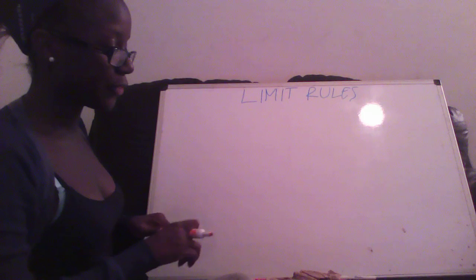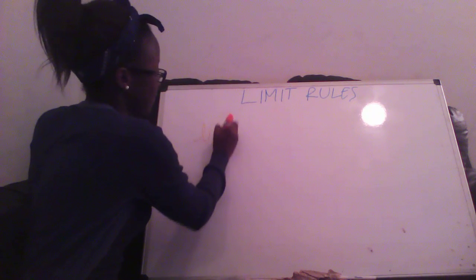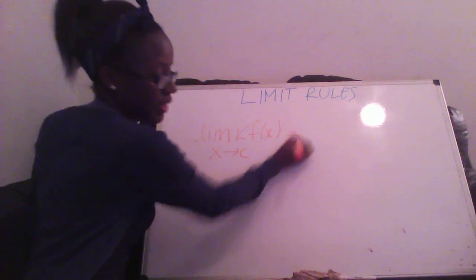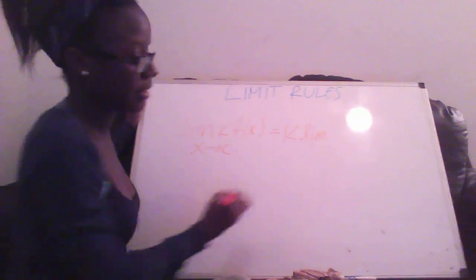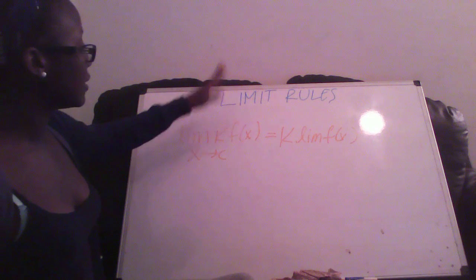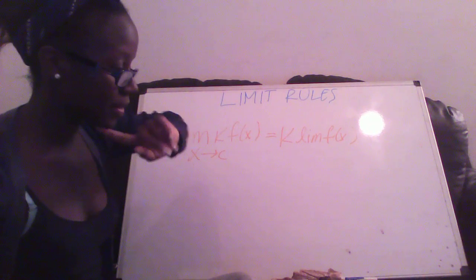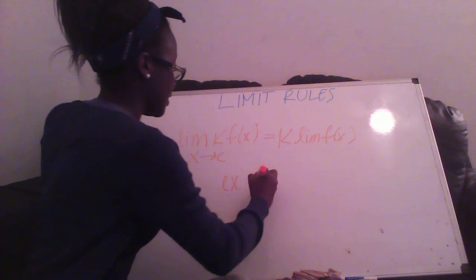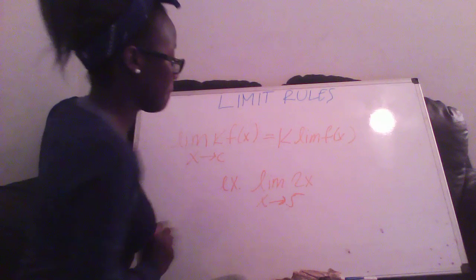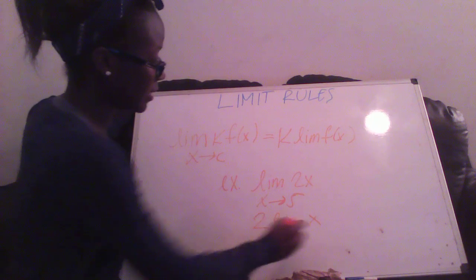The next rule is the constant multiple rule, rule number 5. You have the limit of k times f(x), which is going to equal k times the limit of f(x). Whatever your constant number is, when simplifying to get to your final answer, you just put it right in front of the limit. An example is the limit of 2x — you just put 2 times the limit of x, then plug in 5, and that gives you 10.